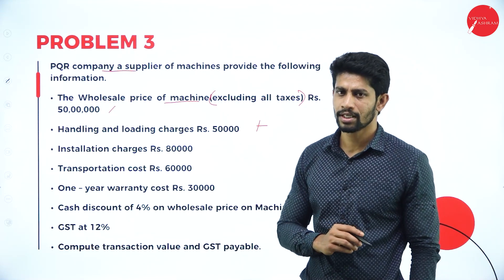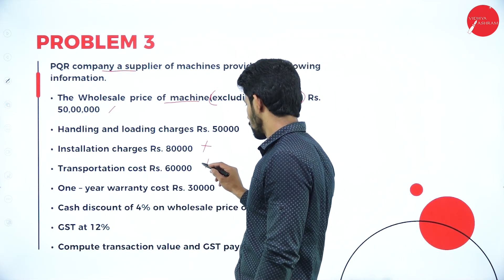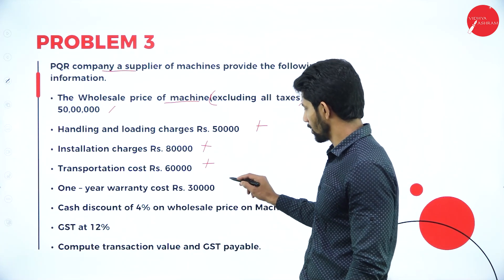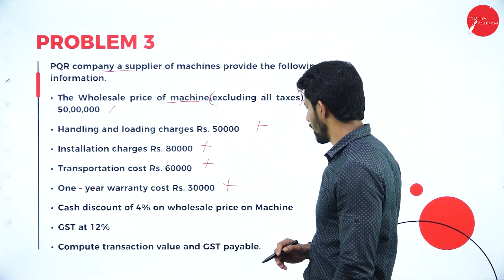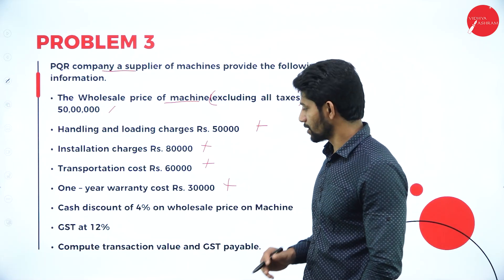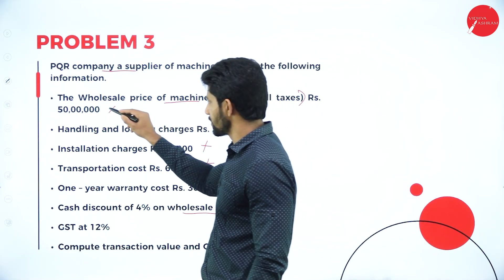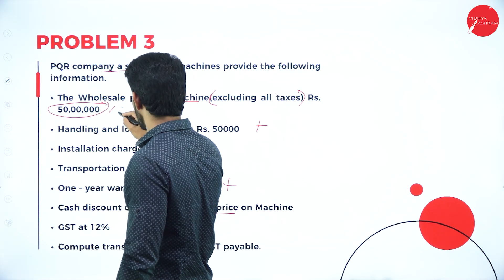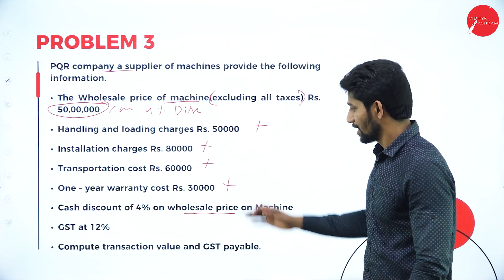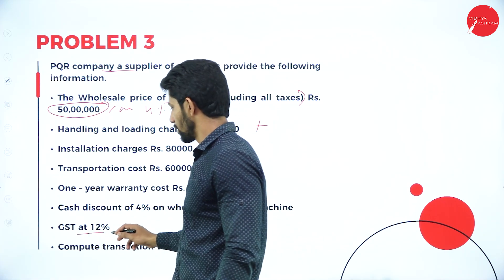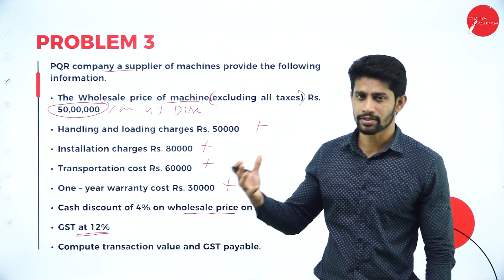Installation charges are Rs. 80,000 — add this. Transportation cost is Rs. 60,000 — add this. One year warranty cost is Rs. 30,000 — add this. Cash discount of 4% on wholesale price of machine: 4% on Rs. 50 lakhs. The rate of GST is 12%. Since whether the transaction is within the state or between states is not mentioned, we assume it is within the state, so we impose CGST 6% and SGST 6%.